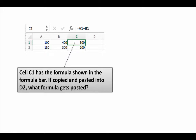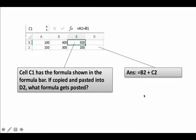Once again pause the video. Once you have an answer, continue and check your answer. So clearly what's going to get pasted is equals B2 plus C2. That is because the formula effectively says add up the two cells to the left same row, and one cell to the left same row. In the context of D2, two cells to the left same row is B2, one cell to the left same row is C2, and therefore what's going to get pasted is equals B2 plus C2.